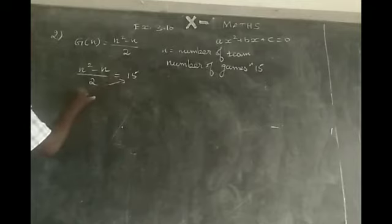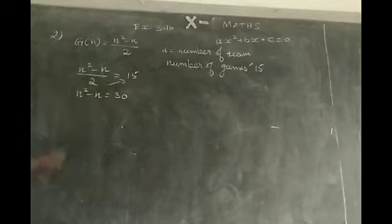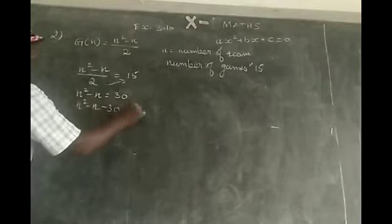Cross multiply. n square minus n is equal to 30. n square minus n minus 30 is equal to 0.